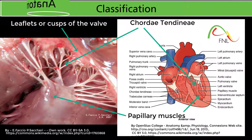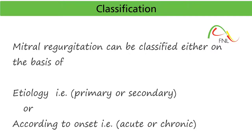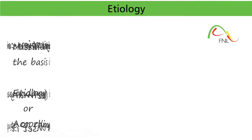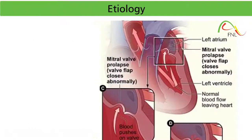Mitral regurgitation can be classified either on the basis of etiology — that is, primary or secondary — or according to onset, that is, acute or chronic. Primary mitral regurgitation, also known as degenerative or organic, involves structural damage. Any physical damage to or deformity of the leaflets, chordae, and/or papillary muscles causes the leaflets to close incompletely and results in mitral regurgitation.